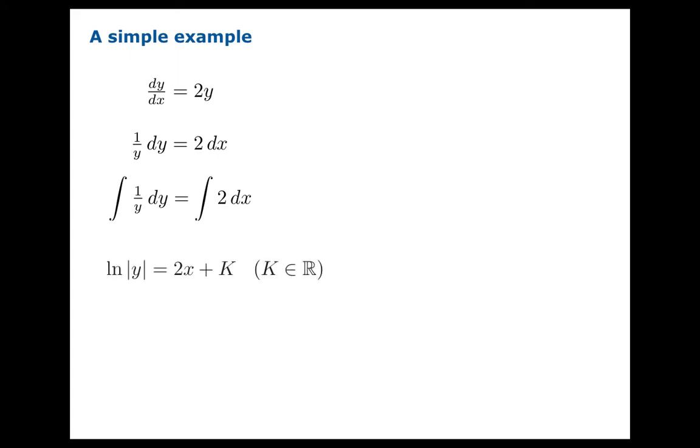And here's the first subtle point. The antiderivative of 1 over y is ln of absolute value of y. You really don't want to lose the absolute value sign there. And that's going to have consequences that ripple through.